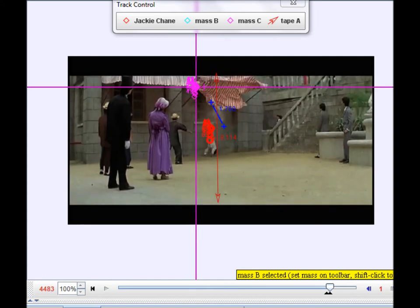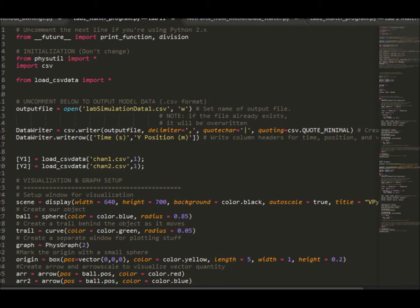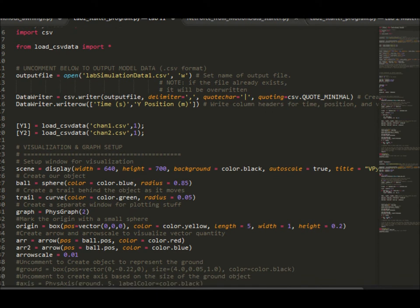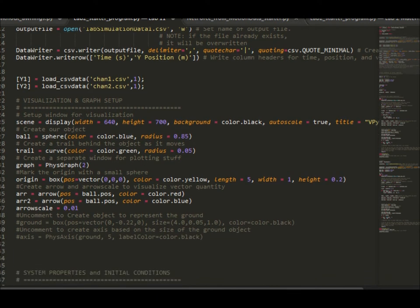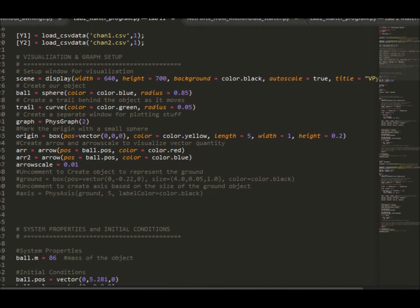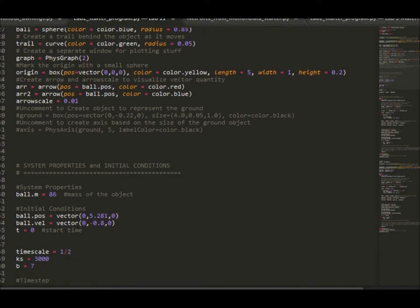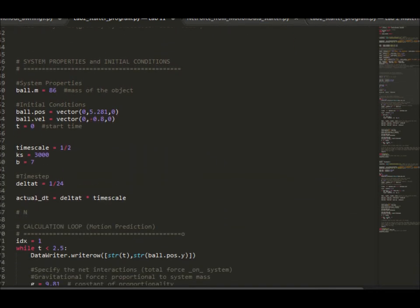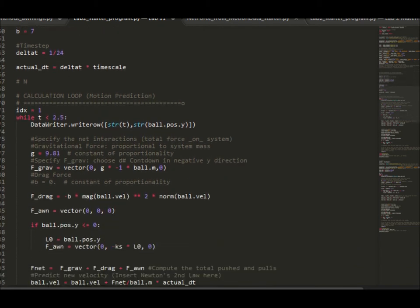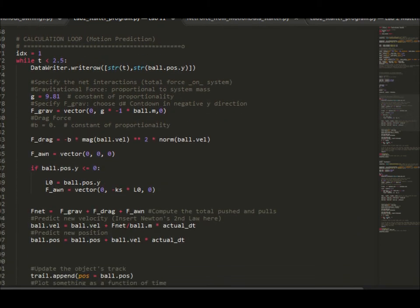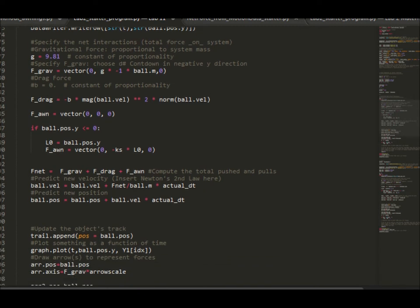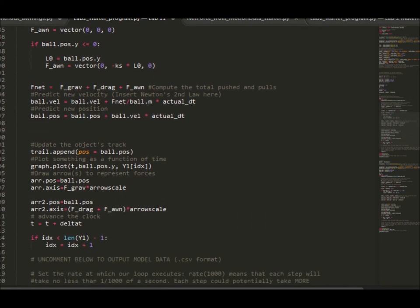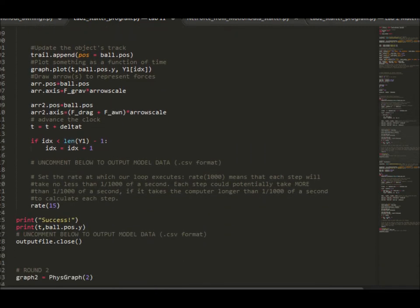Using the position and velocity data found from Tracker, I made a VPython model to model the different parts of the fall. I assumed both awnings had the same spring constant and that drag force had the same proportionality constant b throughout the course of both parts of the fall. I set the initial conditions of the system with the origins based on the two awnings, with the mass of Jackie Chan as 86 kilograms, and with delta-t set to 1 over 24 seconds to account for the frame rate of 24 frames per second in the original video.